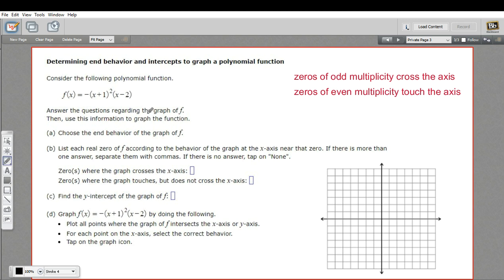so where the branches of the function go off to the left and right, whether they go up or down, and then to find the zeros of the function and their multiplicity, and then the y-intercept, and sketch a graph of that.